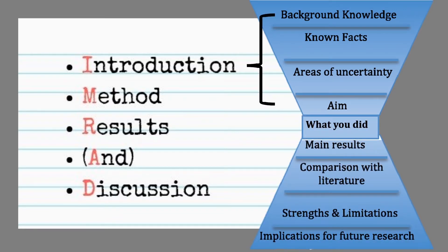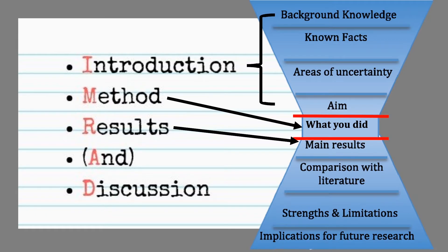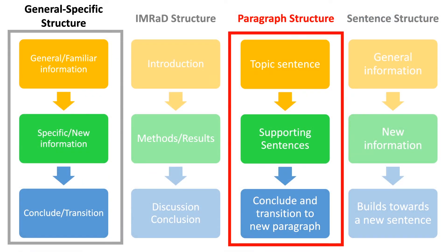Our introduction will cohere ideas together in one section, and that is separate from our methods, which cohere very specific ideas together. They adhere to the results, which is also a different section, and then they adhere to a cohesive discussion. By separating similar things into particular sections, it's easy to break up our writing across the IMRAD sections and understand that all of these dissimilar sections will adhere to each other while maintaining a coherent focus within each section.